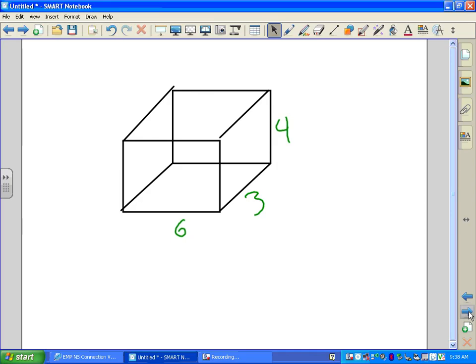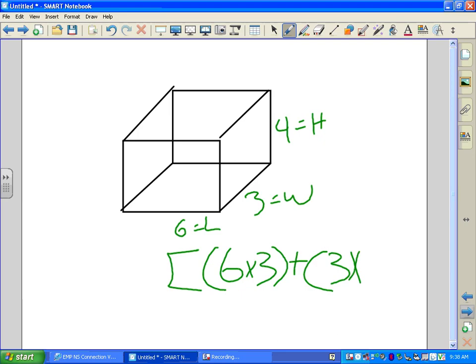For example, your length is 6 and your width is 3 and your height is 4. What you would do is you would do 6 times 3 plus 3 times 4 plus 6 times 4, and then times it all by 2 at the end.